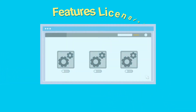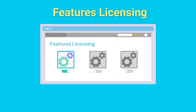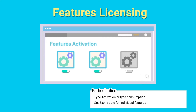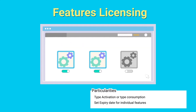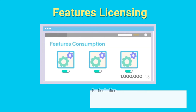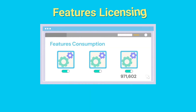Features licensing: if your application is modular, you can define additional features at the product level and then add or remove different features for each license. These features can be of type activation or can also be metered, and can have their own expiry date.